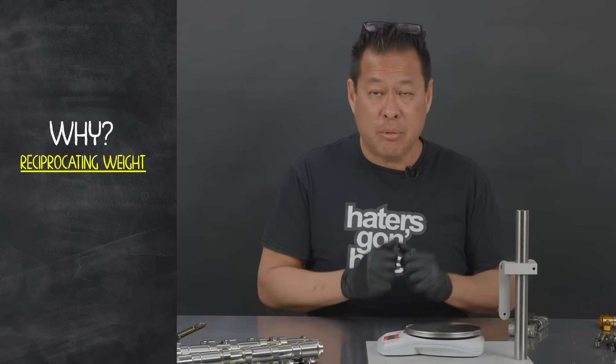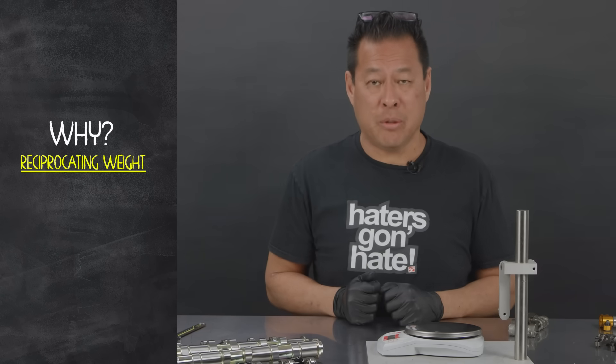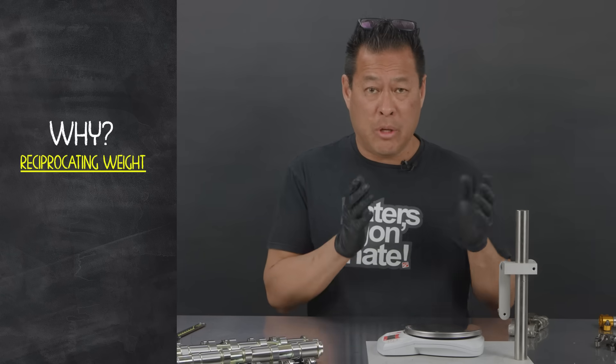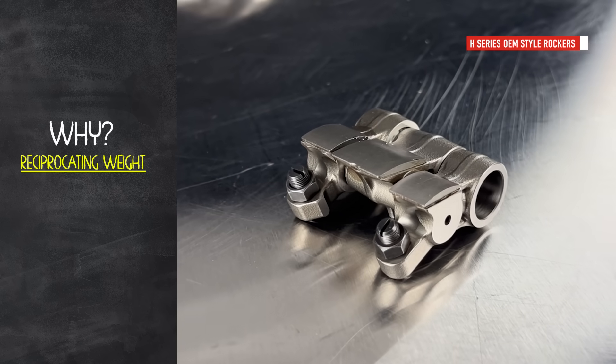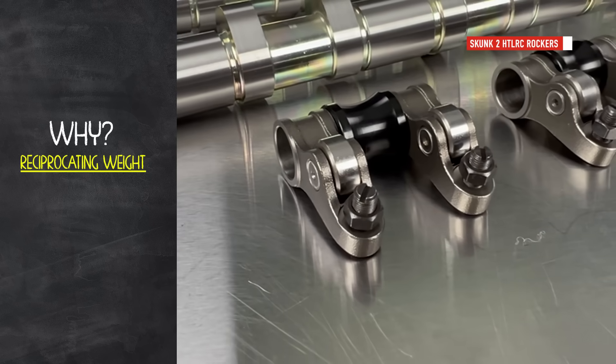I wanted to give you a couple examples so you can understand how much reciprocating weight you're dealing with with the H OEM rockers or the B OEM rockers compared to the TLRC system.